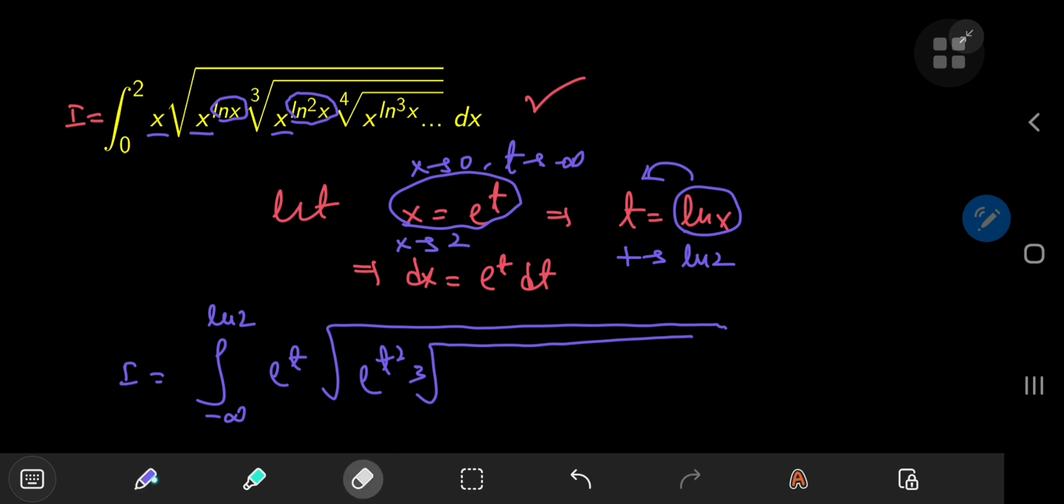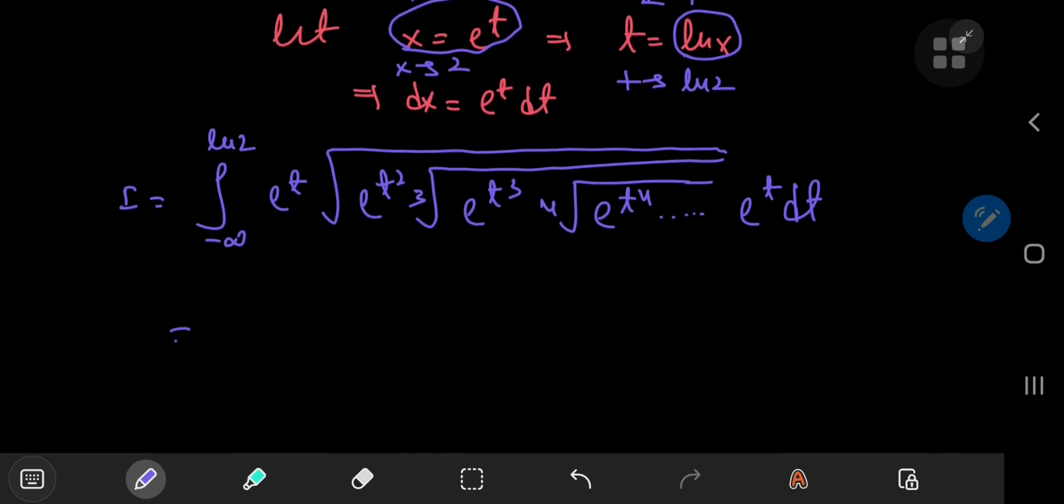So this can be written as e to the t cubed. This is being multiplied by the fourth root of e to the t to the power of 4. And this will go on and on all the way up to the point where you reach the differential element dx, which transforms into e to the t times dt.